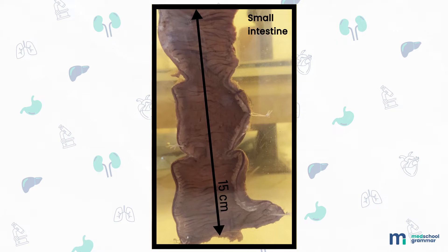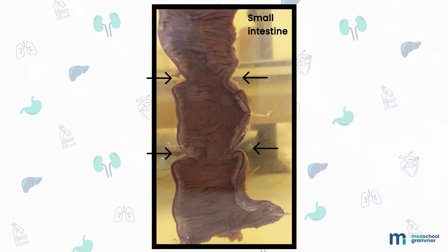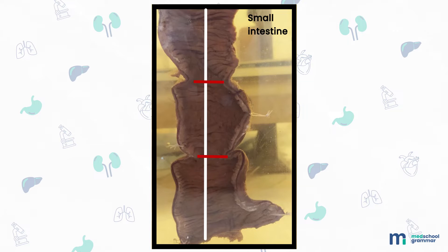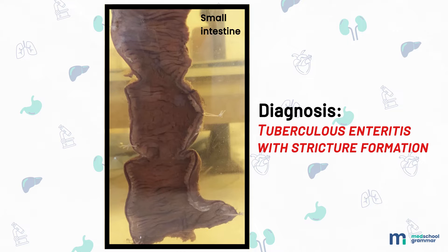Our next specimen is a specimen of the small intestine measuring 15 centimeters in length. The external surface is congested and no tubercles are seen. The cut surface shows two transverse ulcers at the upper and lower ends, measuring 3 by 3 centimeters each, covered with necrotic material. Underlying fibrosis and scarring has led to stricture formation seen in the center of the specimen. The ulcers are perpendicular to the long axis of the intestine. Diagnosis: this is tuberculosis enteritis with stricture formation — tuberculosis of the intestine.